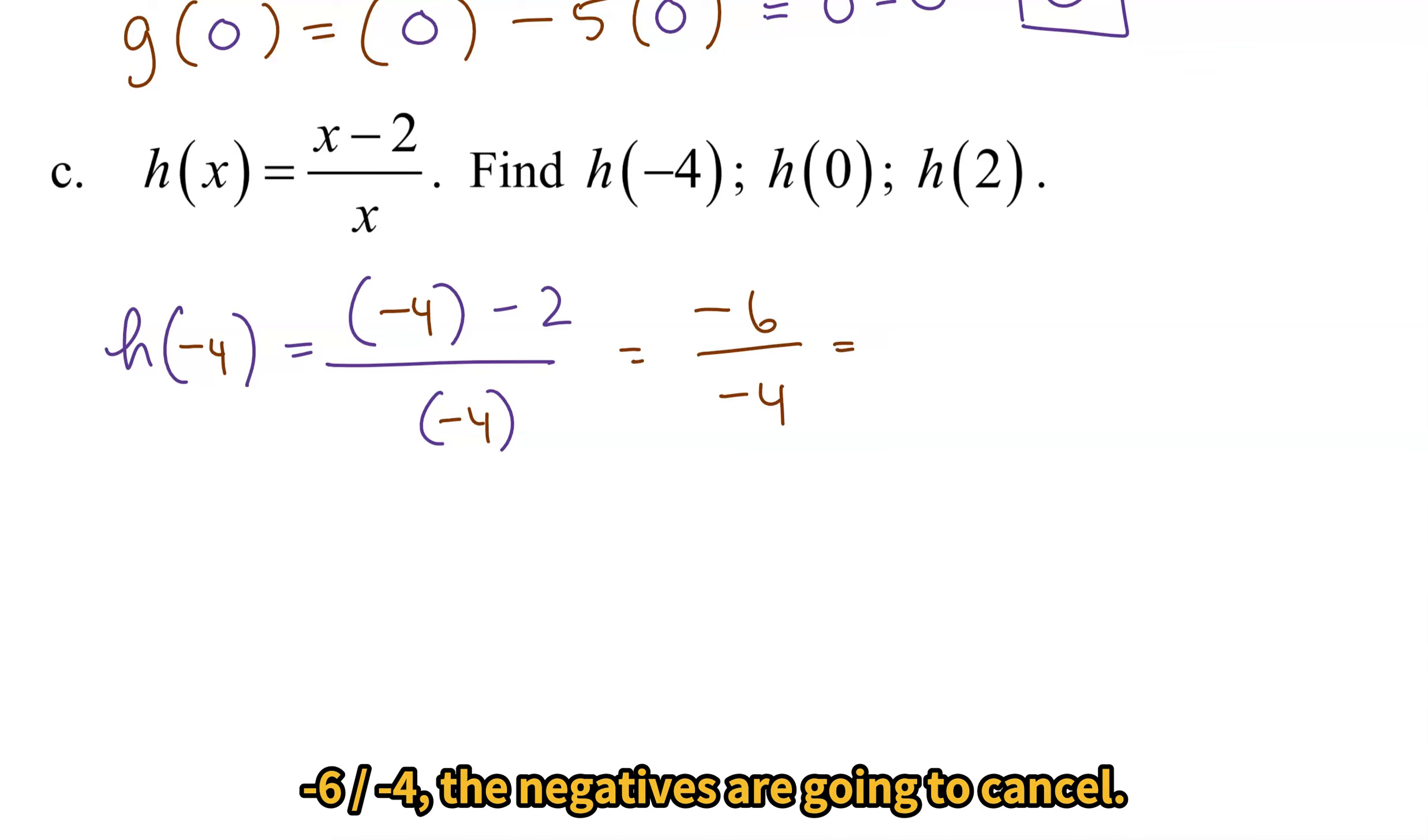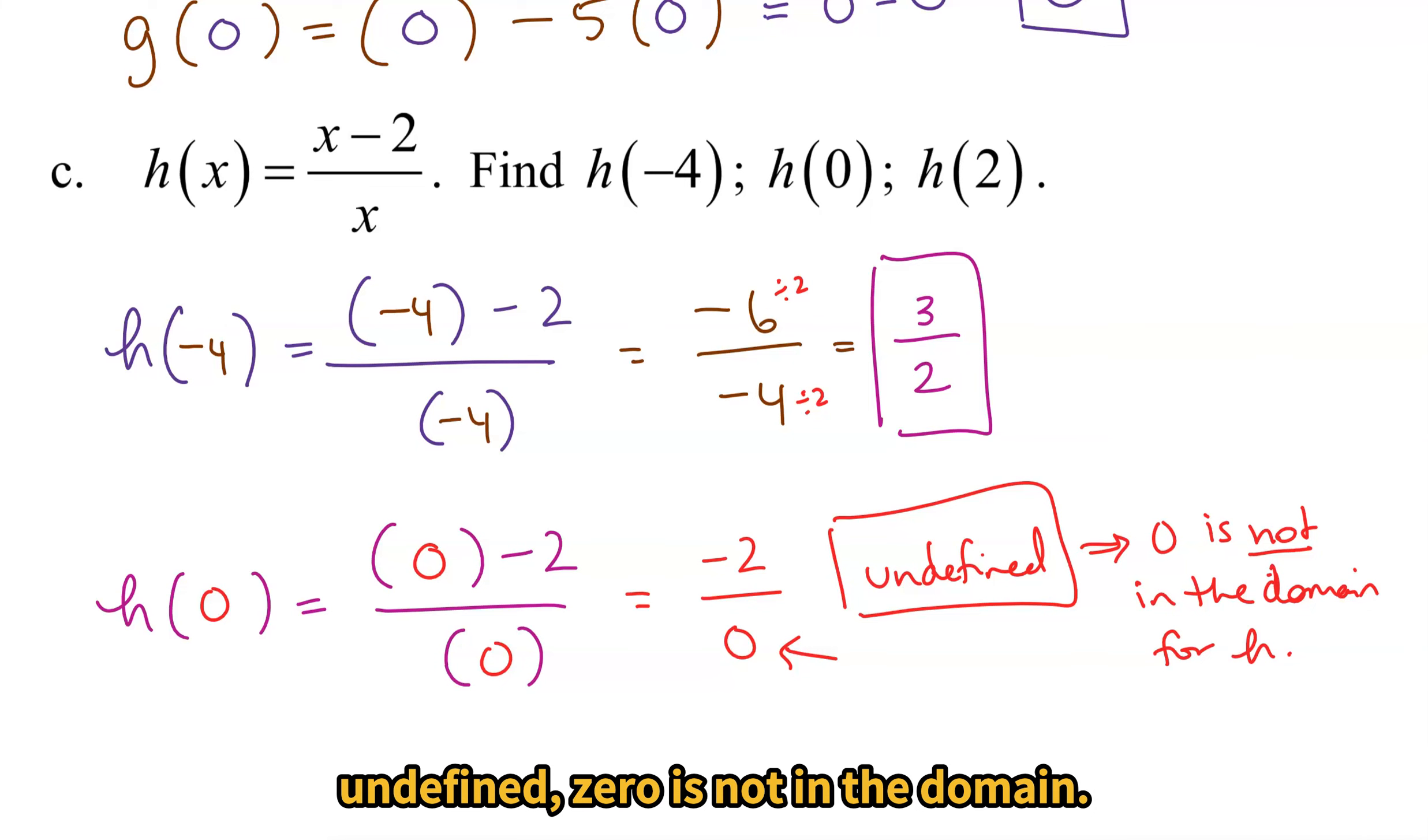If I look at h(0), when I try to plug in 0 here, what happens? I get a 0 in the denominator. Remember, that's bad. h(0) is undefined. What this ultimately means is 0 is not in the domain for our function h here. Because x = 0 makes that denominator 0, which makes the expression undefined, 0 is not in the domain.